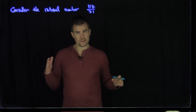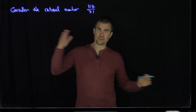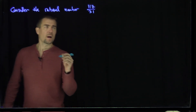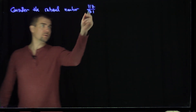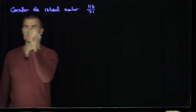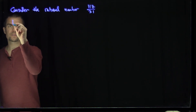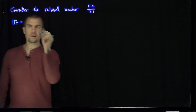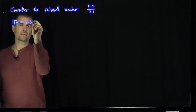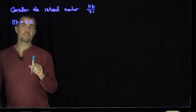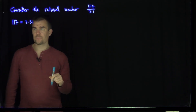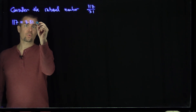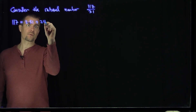I'd like to write this as a continued fraction — a fraction of a fraction that keeps building on itself. The idea is the following: I'm going to perform the actual division, so I can write 117 as 3 times 31, which gives me 93, and then I have a 24 left over, so plus 24.